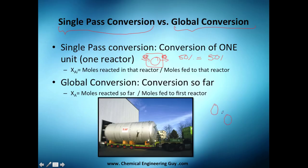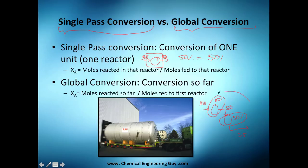But consider a system with two reactors. The first reactor has an input of 100 and a single pass conversion of 50%, so 50 units exit. The second reactor also has 50% conversion, but now it only receives 50, so 25 exit. The individual single pass conversions are both 50%, but the global system is converting 100 into 25, so the global conversion is 75%.